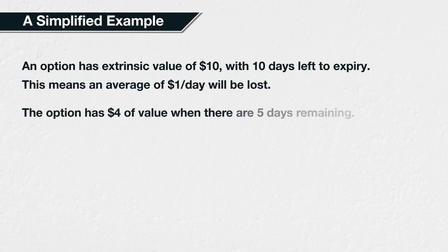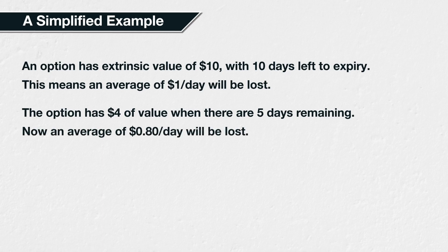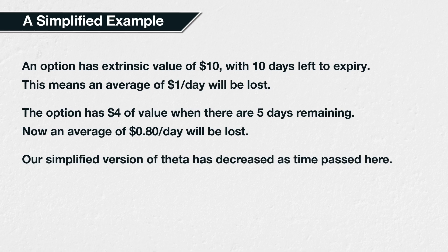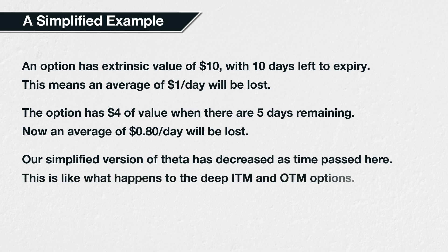Now imagine that 5 days pass, but that the option loses $6 in value during that time. The option now has a value of $4 and 5 days left until expiry. We could now say this option is going to lose an average of $0.80 a day for the next 5 days, which is $4 divided by 5 days. So our simplified average version of theta has now reduced from $1 to $0.80. The rate that the option lost value in the first 5 days outpaced the rate at which time passed — 50% of the time passed, but 60% of its value was lost. As a result, our simplified version of theta decreased. This is essentially what's happening for the theta of deep-in-the-money and deep-out-of-the-money options, just with slightly more complicated maths behind it.